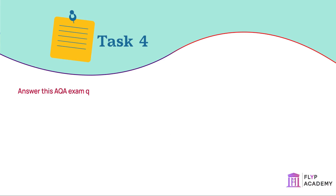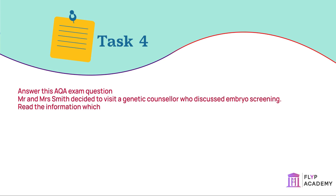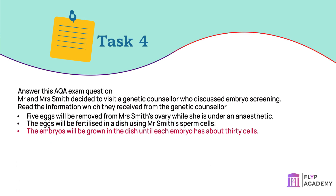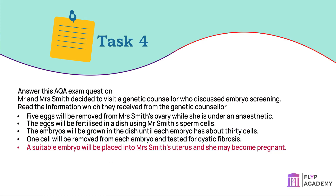Task: Answer this AQA exam question. Mr and Mrs Smith visited a genetic counsellor who discussed embryo screening. Five eggs will be removed from Mrs Smith's ovary under anaesthetic and fertilised in a dish using Mr Smith's sperm cells. The embryos will be grown until each has about 30 cells, then one cell will be removed from each embryo and tested for cystic fibrosis. A suitable embryo will be placed into Mrs Smith's uterus. Any unsuitable embryos will be destroyed. Part A: Suggest why it is helpful to take five eggs and not just one. Part B: Evaluate the use of embryo screening in this case, and give a conclusion.